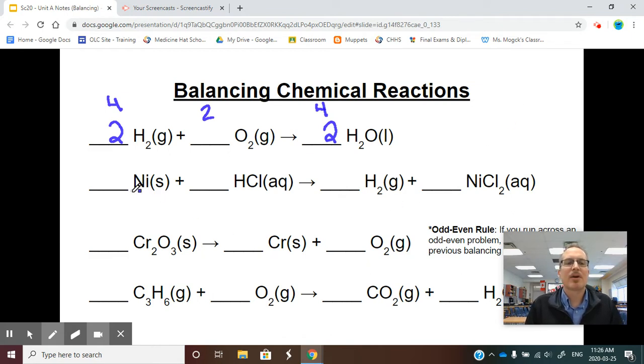Let's try another example. We have one nickel on the left, one nickel on the right - they're balanced. We have two chlorines on the right, only one on the left, so we're going to put a two here. Two chlorines now on the left. I have two hydrogens on the left, two on the right. Let's check our work: one nickel, one nickel. Two chlorines, two chlorines. Two hydrogens, two hydrogens.